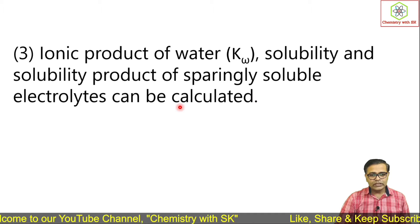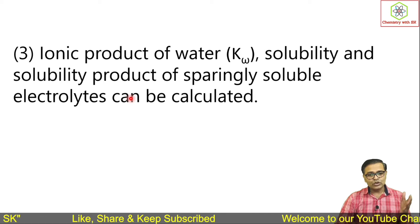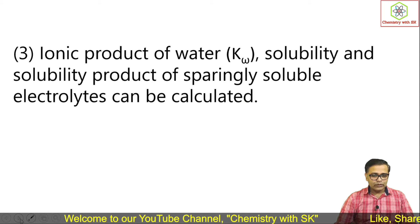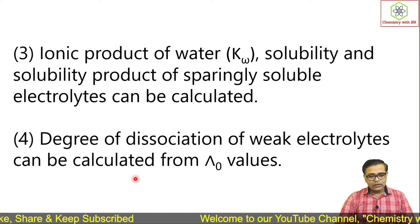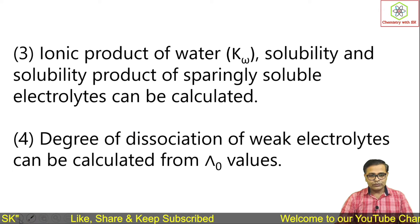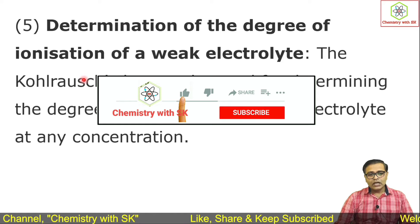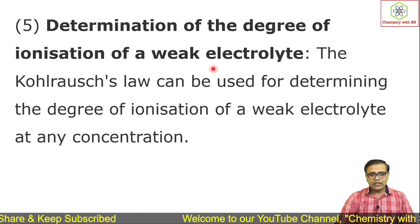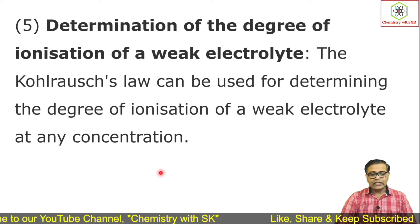Further applications include: determining the ionic product of water, and the solubility and solubility product of sparingly soluble electrolytes. The degree of dissociation of weak electrolytes can also be calculated from Λ₀ values — the extent of dissociation, the alpha value. Finally, Kohlrausch's Law can be used for determining the degree of ionization of a weak electrolyte at any concentration. That's it for today — thank you, see you in the next video, bye bye.